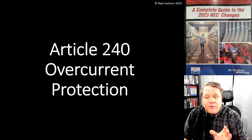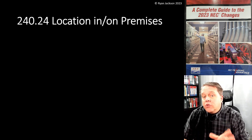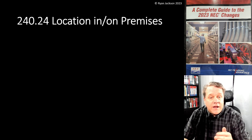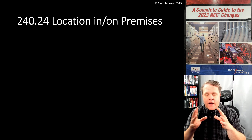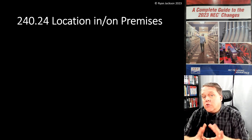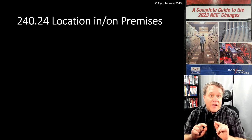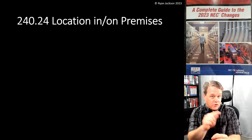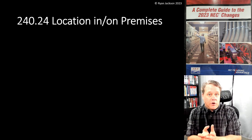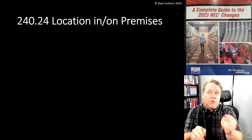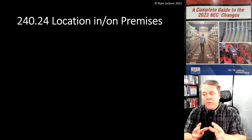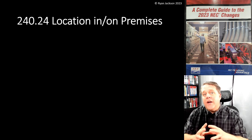Still talking about Article 240, let's discuss 240.24 — location of overcurrent devices in/on the premises. 240.21 talks about the location of overcurrent protection devices as it relates to their location in the circuit — you have to have a circuit breaker or fuse at the beginning of the circuit, or sometimes at the end. But 240.24 talks about the actual physical location within the building.